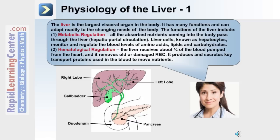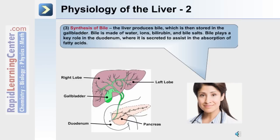In hematological regulation, the liver receives approximately one quarter of all the blood pumped from the heart. It functions to remove old or damaged red blood cells and produces key transport proteins used in the blood to move nutrients. The third major function of the liver is the synthesis of bile. Bile is produced by the liver, stored in the gallbladder, and is made up of water, ions, bilirubin, and bile salts.